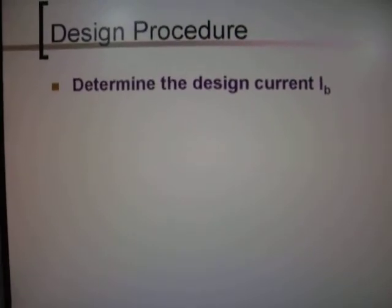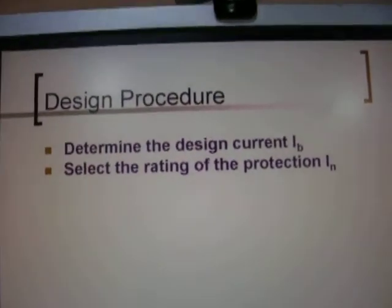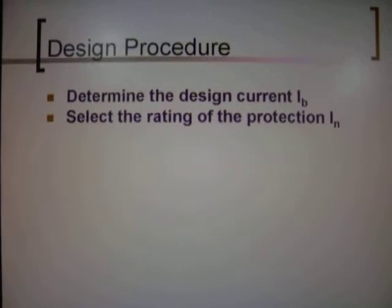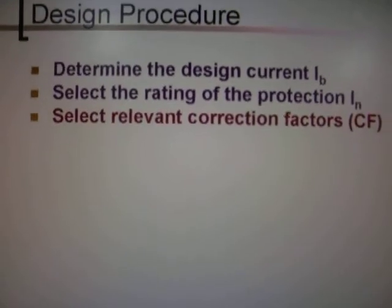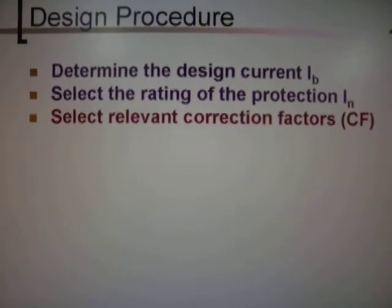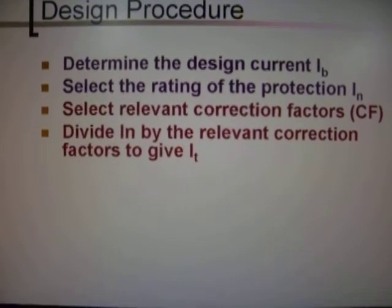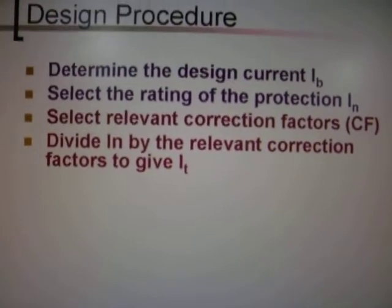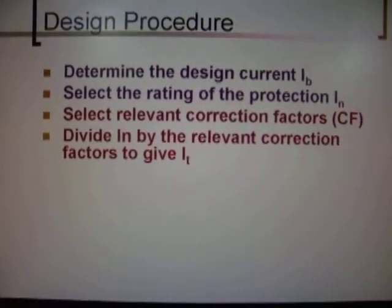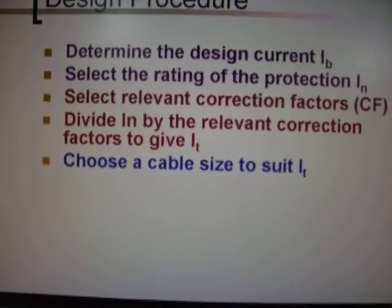Now here we're looking at the design procedure to determine the design current IB, select the rating of the protection IN, select relevant correction factors, and divide IN by the relevant correction factors to give IT. IT simply means current total or total current.